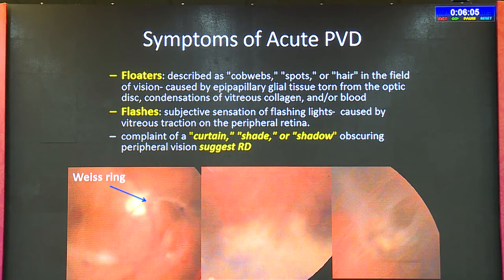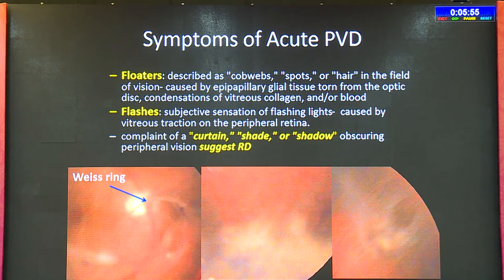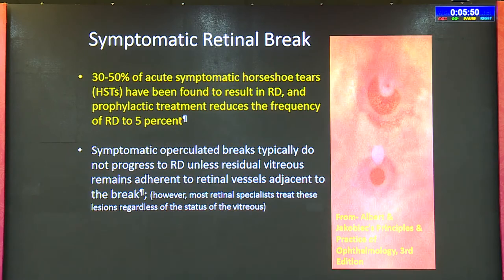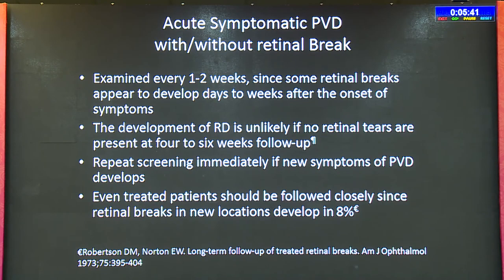Symptomatic retinal breaks — that is, breaks in the presence of acute PVD symptoms — must be urgently lasered. All patients with acute PVD, with or without retinal breaks, must be examined every one to two weeks for a minimum of six weeks, since some retinal breaks develop days or weeks after the onset of symptoms. A 55-year-old lady presented with vitreous hemorrhage without relevant history, was asked to follow up after a week, but returned only after three weeks with a retinal detachment — highlighting the importance of timely follow-up.